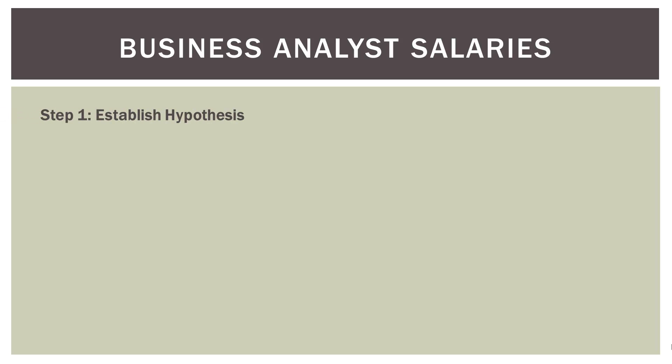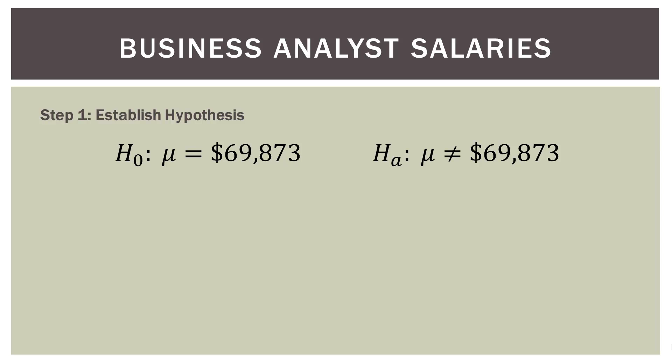Step one: establish our hypothesis. We went ahead and formulated a good problem in the previous slide. So in the numbers, step one is to establish a hypothesis. Our null hypothesis is that the current salary mean is the same as the previous one six years ago — so mu is equal to $69,873.